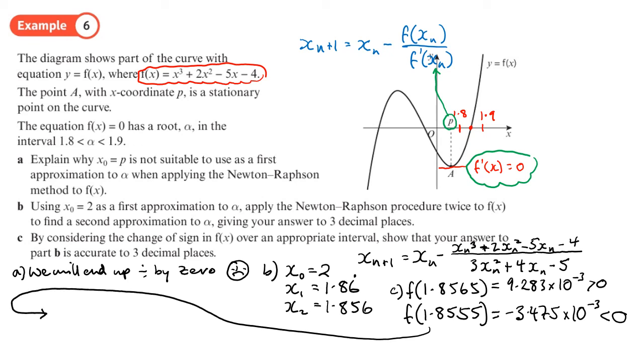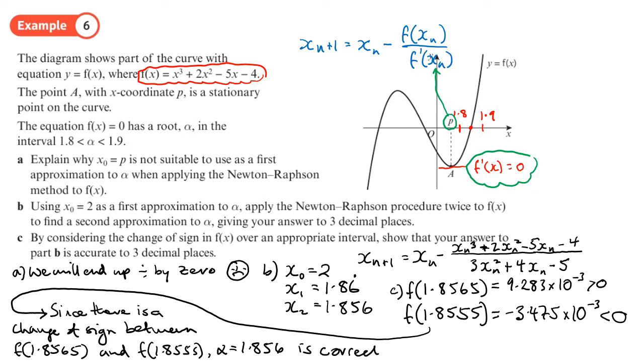So we're right down over here. Since there is a change of sign, there it is again, that phrase, between f(1.8565) and f(1.8555), that means that α = 1.856 is correct to three decimal places.